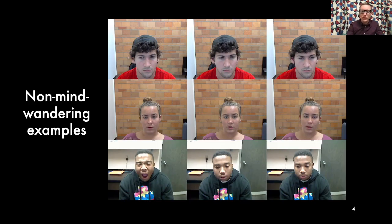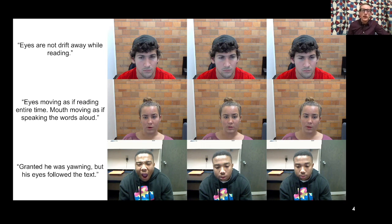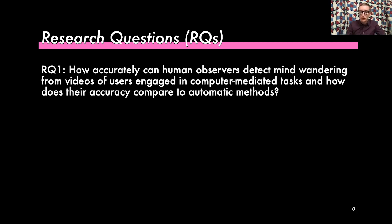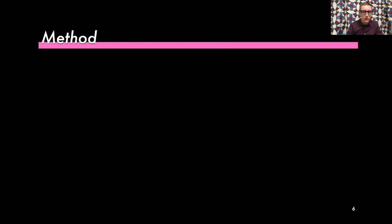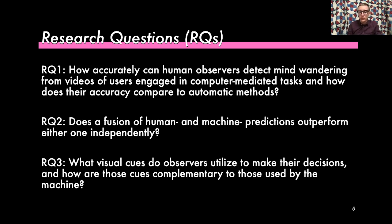In the non-mind-wandering examples, participants tended to talk about eyes moving as if reading and following the text. Our research questions first focused on comparing human third-party observers in their ability to detect mind-wandering versus automatic computer vision-based methods. Second, we explored a fusion of human and machine predictions to determine whether that could be even more accurate. Finally, we explored the visual cues that observers use, as well as the cues the computer was picking up on.